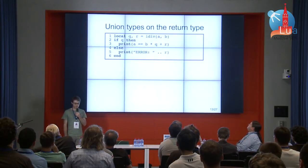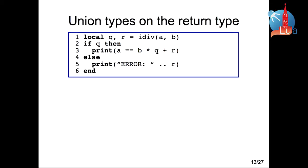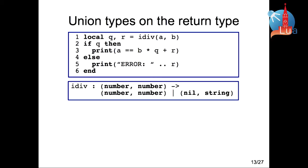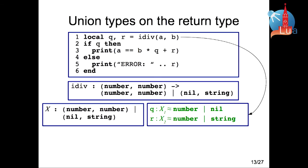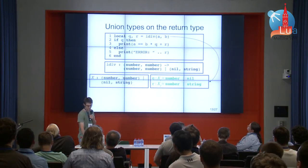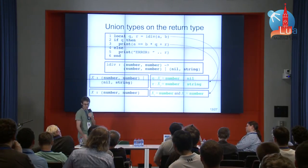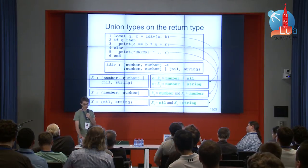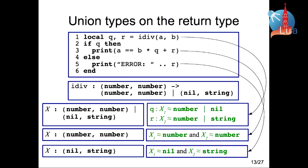We can also use unions on the return type. This is a very common idiom in Lua: the function 'id' returns two numbers, or nil and string to denote an error. When TypedLua finds a union of tuples on the right-hand side of a declaration and the left-hand side is unannotated, it stores this union in a special environment and assigns projections to these variables. So the type of q is number or nil, and the type of r is number or string. When we use if to constrain these types, inside the if both q and r are numbers, and inside else, q is nil and r is string.